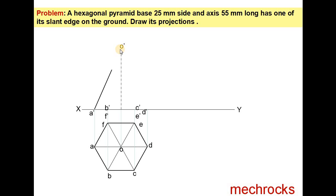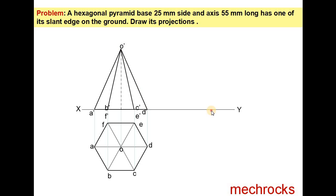Then you draw O' with A', O' with B', O' with C', O' with D'. Then you draw A' to D'. Then you have to satisfy this condition: one of the slant edges on the ground. You have to rotate this slant edge O'D' onto the XY line. Take O' somewhere and transfer this length. The length of this slant edge equals O'D', and here is D'.